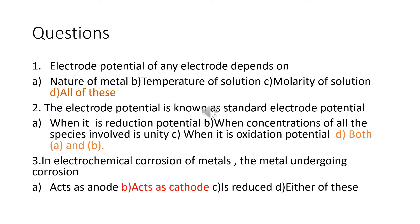Now we see some questions based on PGT chemistry. Question: Electrode potential of any electrode depends on — options: nature of metal, temperature of solution, molarity of solution, or all of these. The answer is all of these. Electrode potential depends on the nature of the electrode, the temperature of the electrolyte (if temperature increases, the current supply and potential also change), and the molarity — that is, concentration — of the solution.